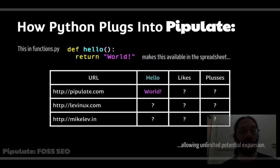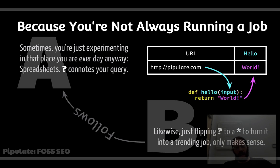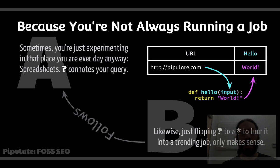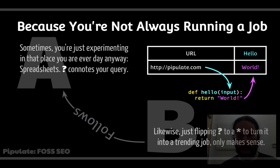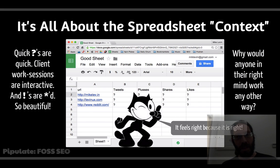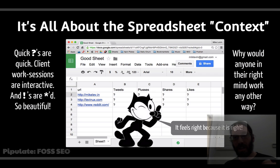Spreadsheets — where you can write a hello-world program and have it fit right into your daily workflow. Code that you wrote. It can be for quick lookups; not everything has to be a big scheduled job. Sometimes you just want to write some quick code and use it every day as a tool in your toolbox. Not every job is scheduled, but if you want it to be, just replace the question mark with an asterisk and it's scheduled — because it's all about that spreadsheet context. That's where people live every day, where they want to see their data and share it.